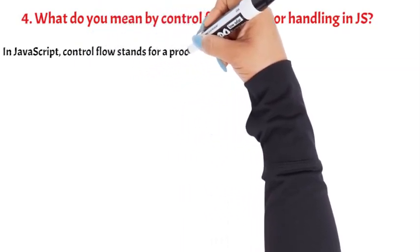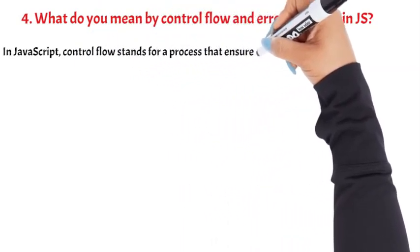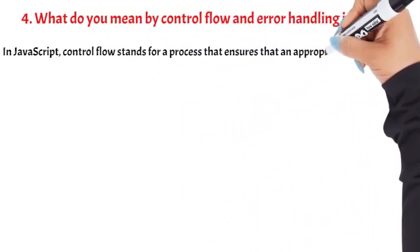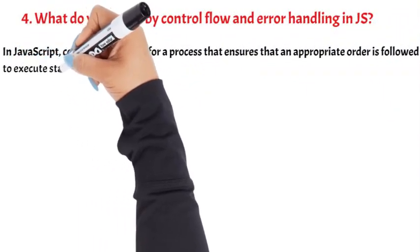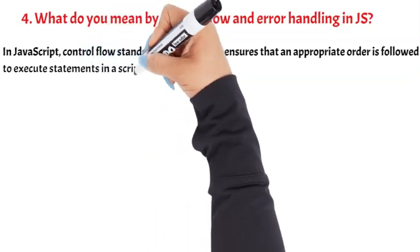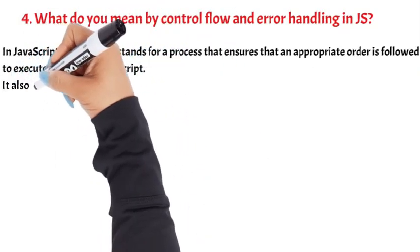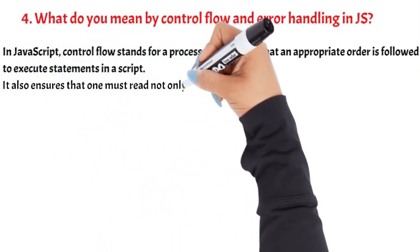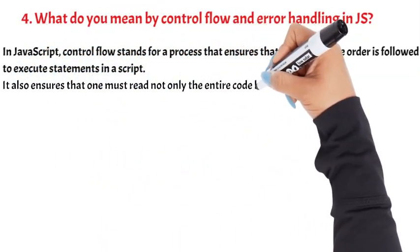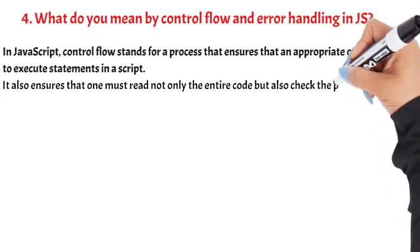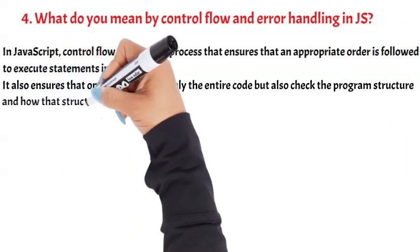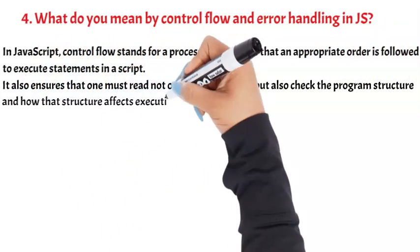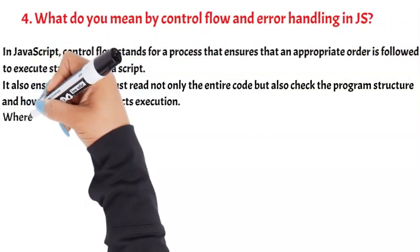Question 4: What do you mean by control flow and error handling in JS? In JavaScript, control flow stands for a process that ensures an appropriate order is followed to execute statements in a script. It also ensures that one must read not only the entire code, but also check the program structure and how that structure affects execution.